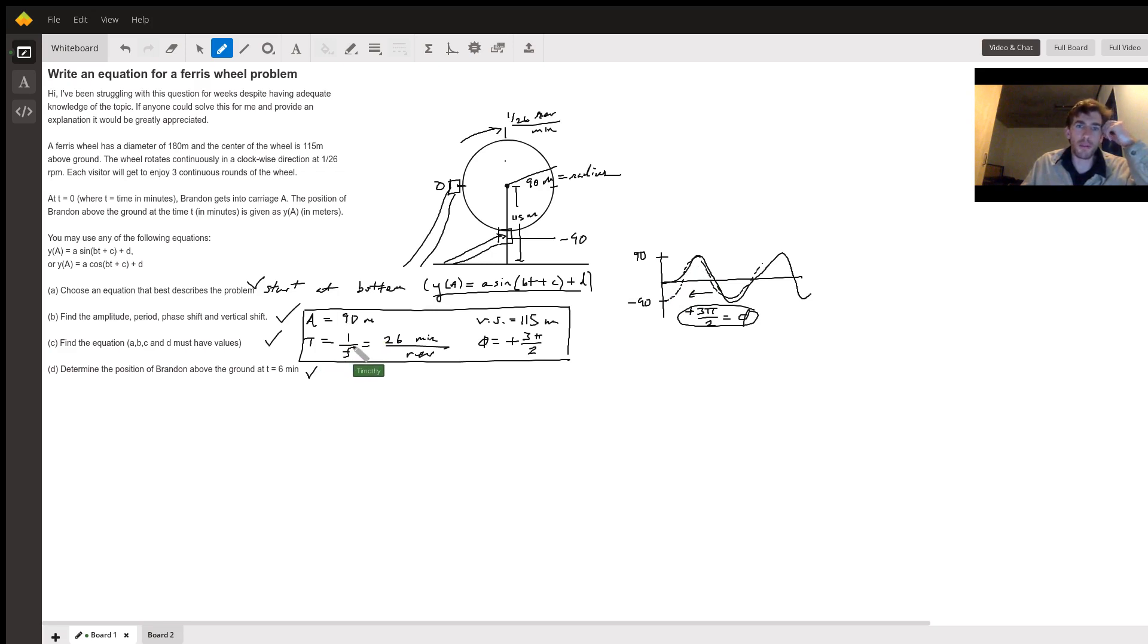The period is one over the frequency, or 26 minutes per revolution, because the frequency is one revolution every 26 minutes. So you just inverse that. That's the period. The vertical shift is how high he's going from the ground level all the way to the center, which is 115 meters. So that solves part B.